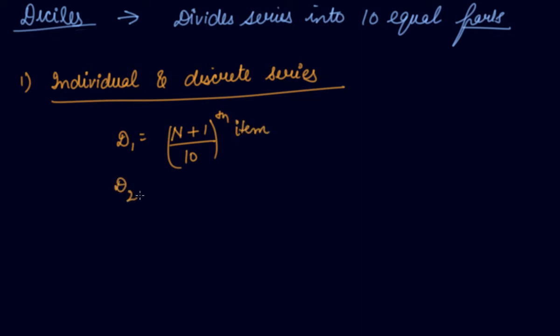Then if you have to find out the deciles 2, 2 into n plus 1 by 10th item. Then deciles 3, 3 n plus 1 by 10th item.